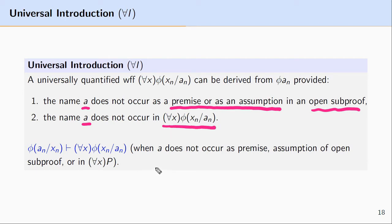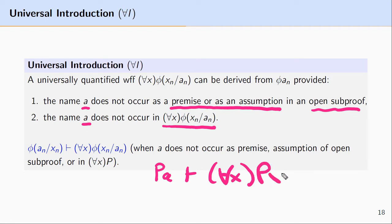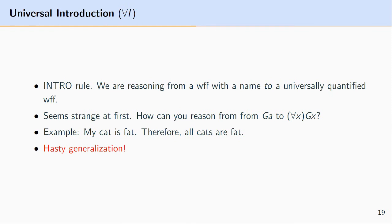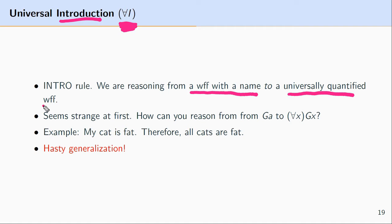Essentially, universal introduction states that we can reason from a formula like PA to a universally quantified formula like for all x, Px, where we're replacing A with x and putting a quantifier in front of it, provided we meet these two restrictions. This is an introduction rule where we're reasoning from a formula with a name to a universally quantified well formed formula.